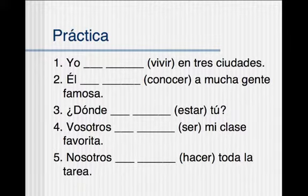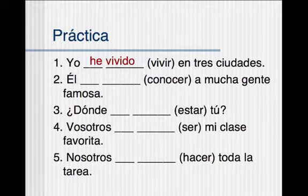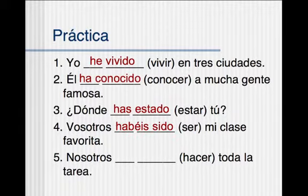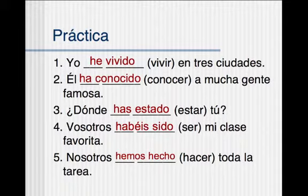Here's a little practice. Why don't you pause the screencast and see if you can fill in these sentences with the correct form of the presente perfecto. — Alright, let's go over the answers now. Yo he vivido en tres ciudades — I've lived in three cities. Él ha conocido a mucha gente famosa — He has met many famous people. ¿Dónde has estado tú? — Where have you been? Vosotros habéis sido mi clase favorita — You have been my favorite class. Nosotros hemos hecho toda la tarea — We've done all of our homework. That's why you're my favorite class!